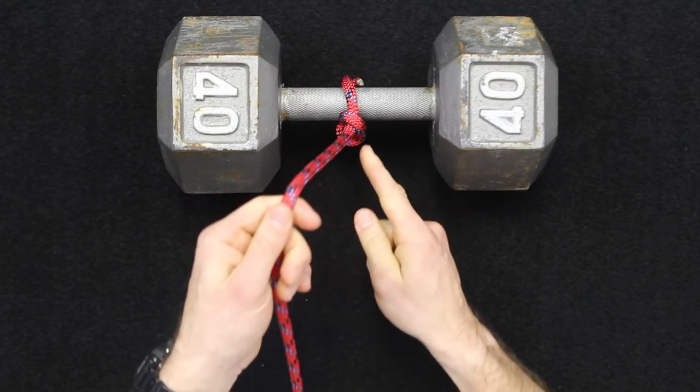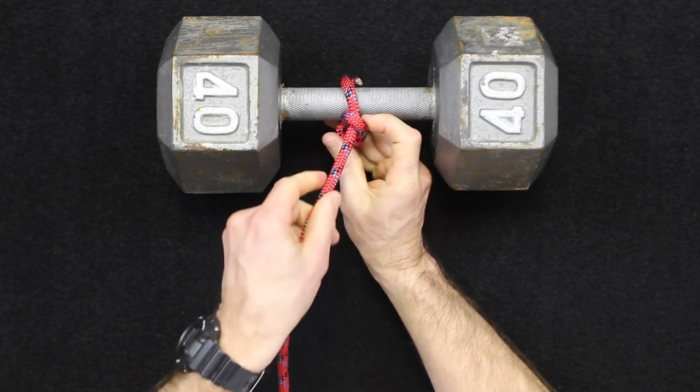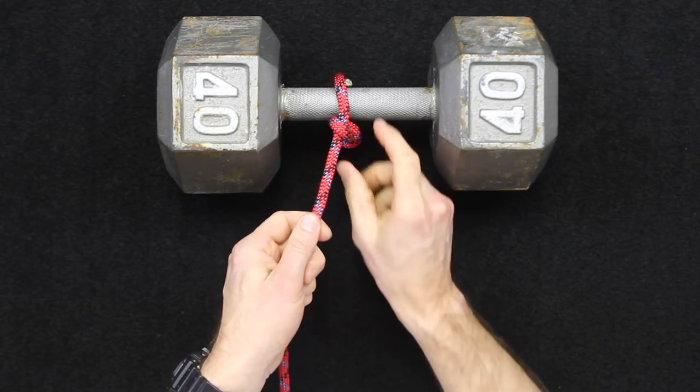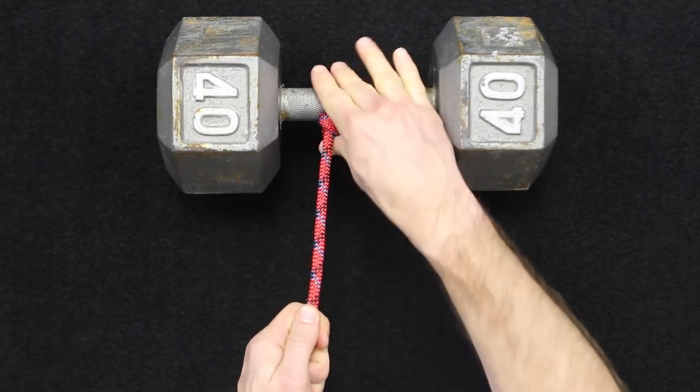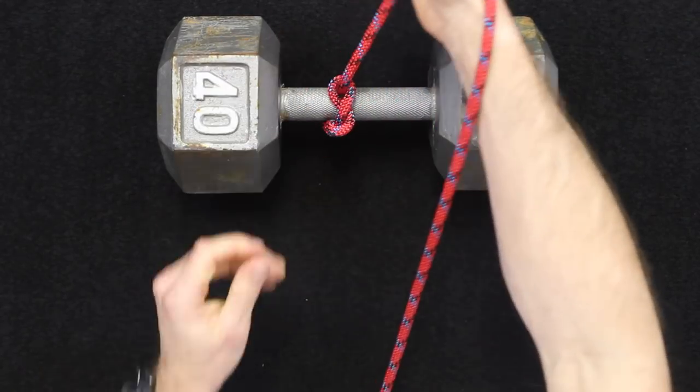So that is the timber hitch. What you're creating with those wraps is basically a free floating self-tightening knot called the timber hitch.